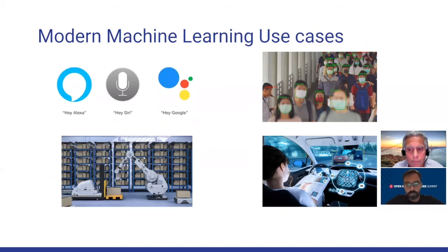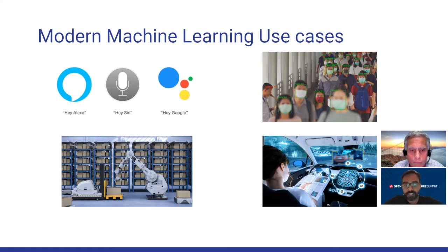With this rise in deep learning and more computing capabilities, we're seeing more modern machine learning use cases. Our phones have smart assistants; algorithms predict whether a person is wearing a mask in public; warehouse automation is rapidly becoming a reality with the growth of e-commerce and online ordering; and autonomous driving is slowly becoming a reality as well.